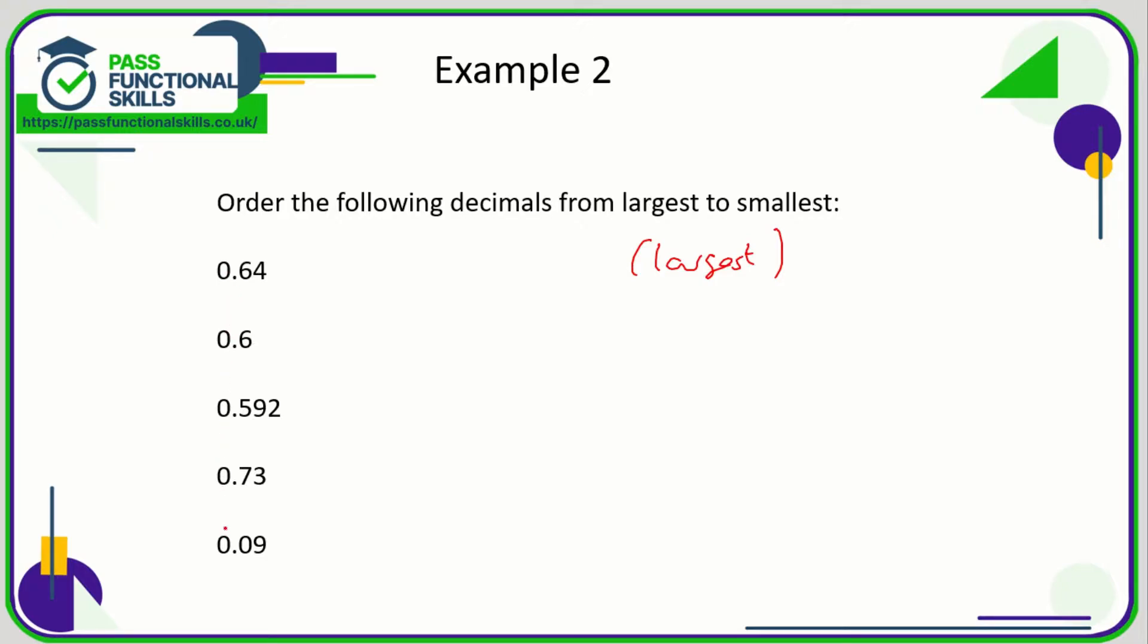The zeros are in the units column for all of them. The zero is immediately followed by decimal points for all of them, so we can't tell them apart from the first digit. We're going to have to look at the value of the tenths columns. We've got 0, 7, 5, 6, and 6.